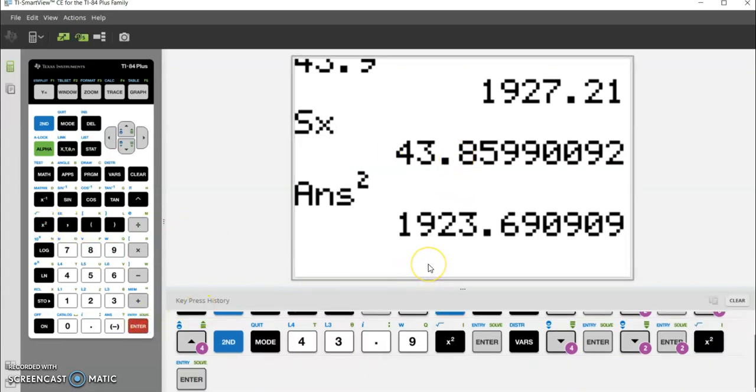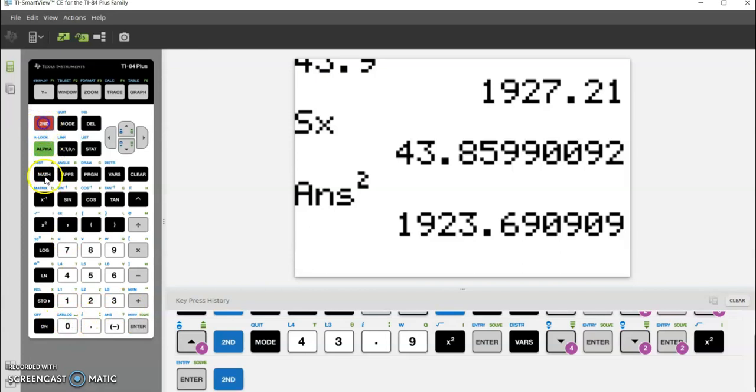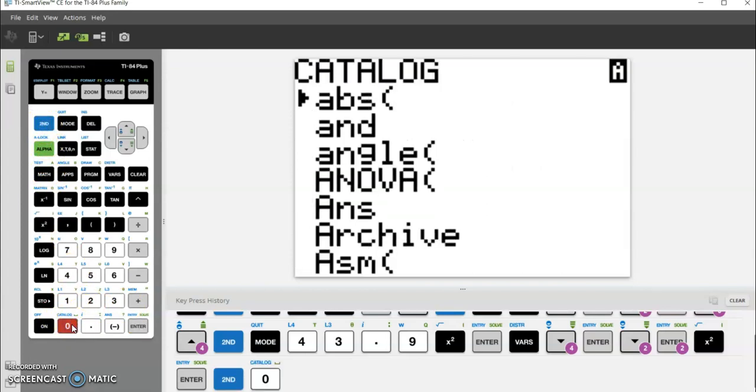Method three: go to the catalog, which is 2nd 0 above the zero key. This brings up the catalog. I need to get all the way down to the V's, so I'm going to hit ALPHA, then V, which is the 6 key. Right here is variance.